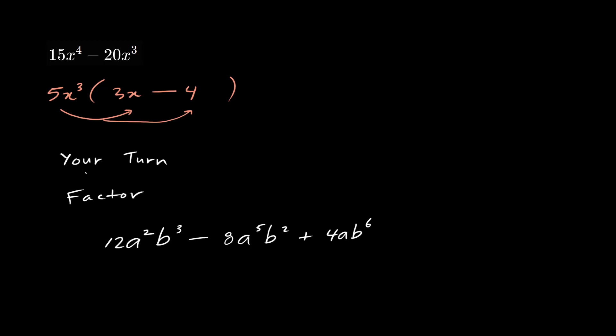And now it's your turn. Try factoring 12a squared b cubed minus 8a to the 5 b squared plus 4ab to the 6.